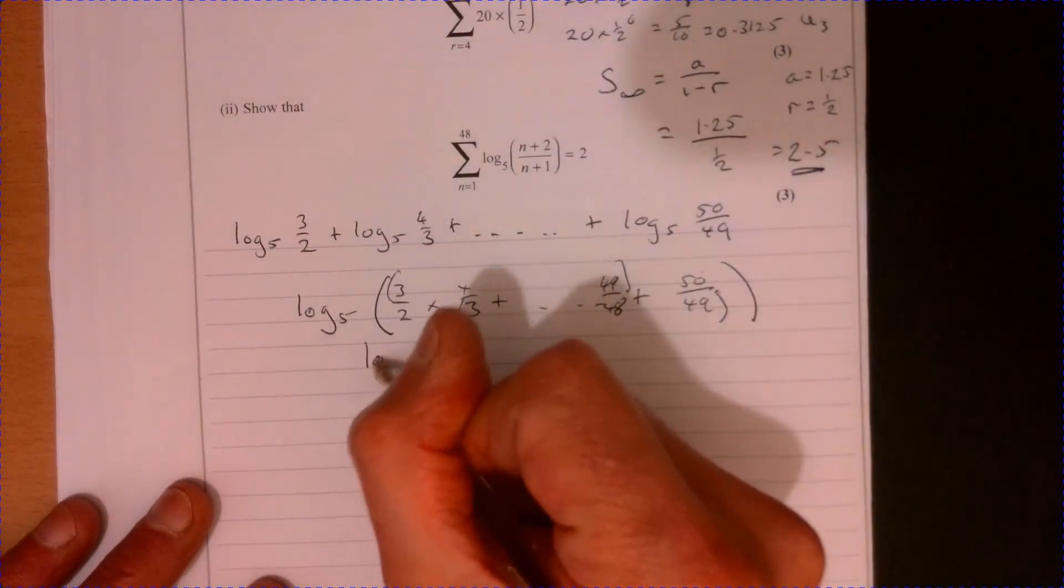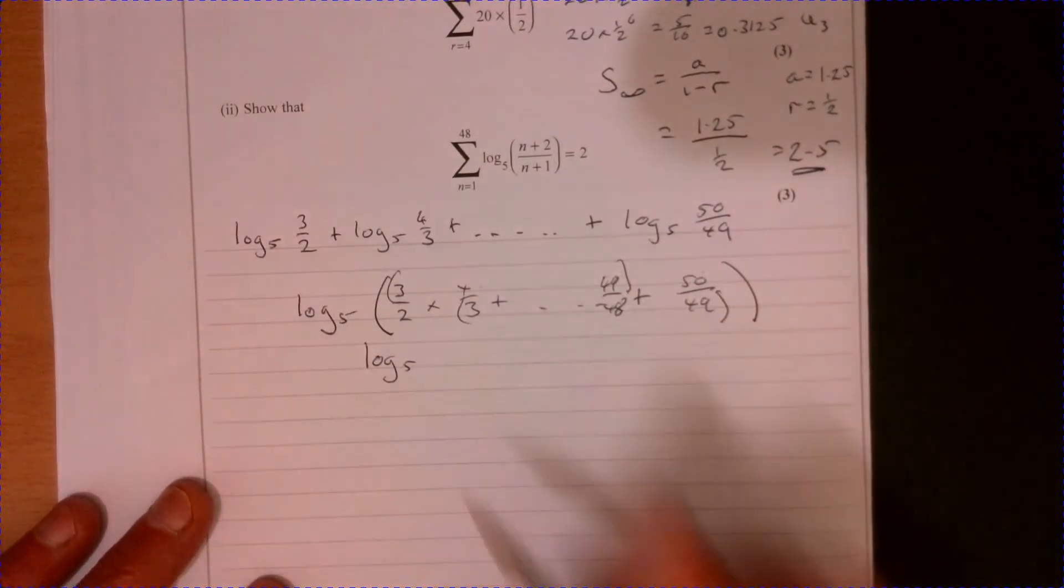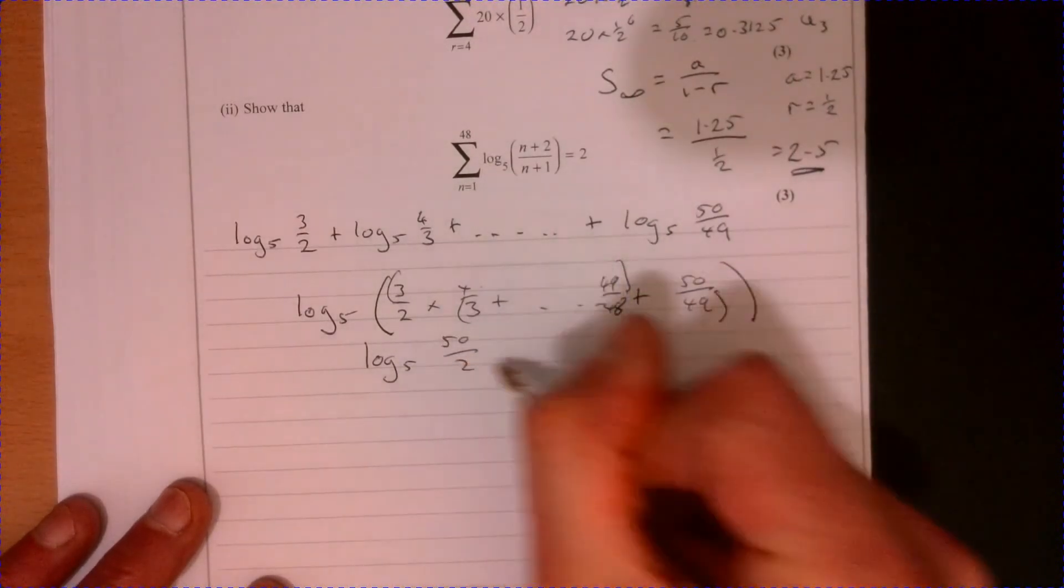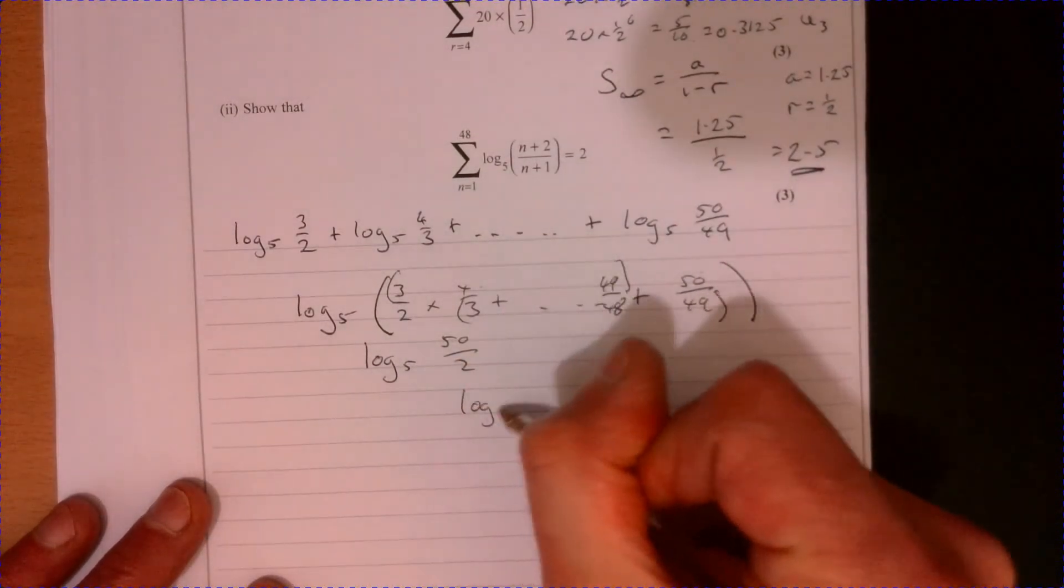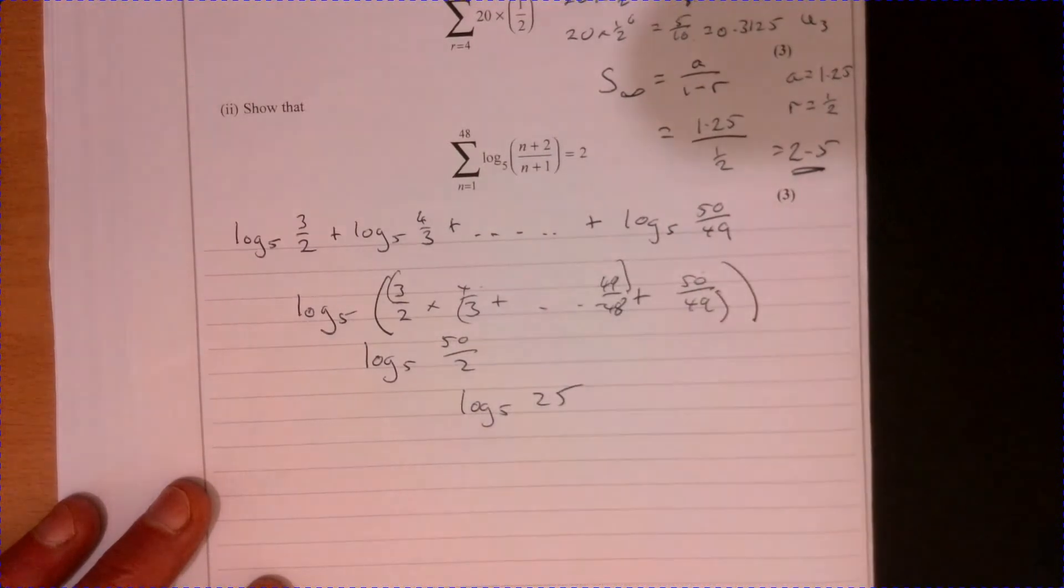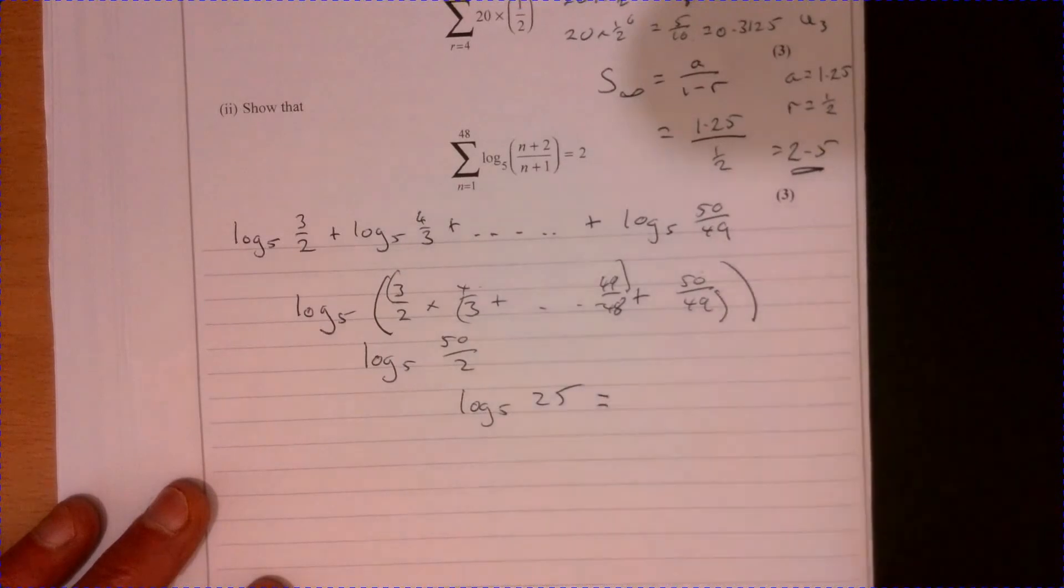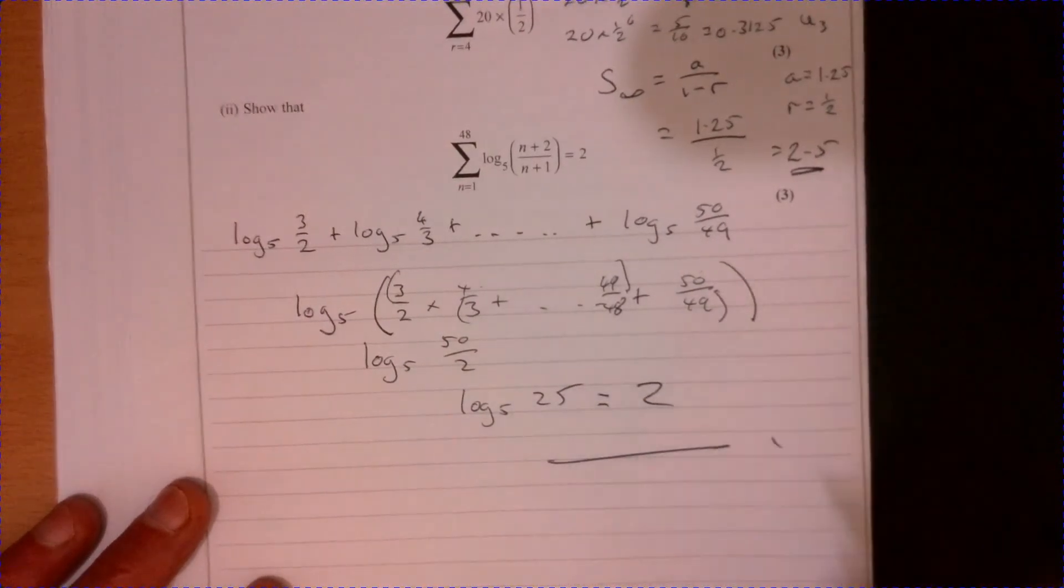So it's going to be log base 5 of 50/2, that's log base 5 of 25, and plug that in and you get 2.